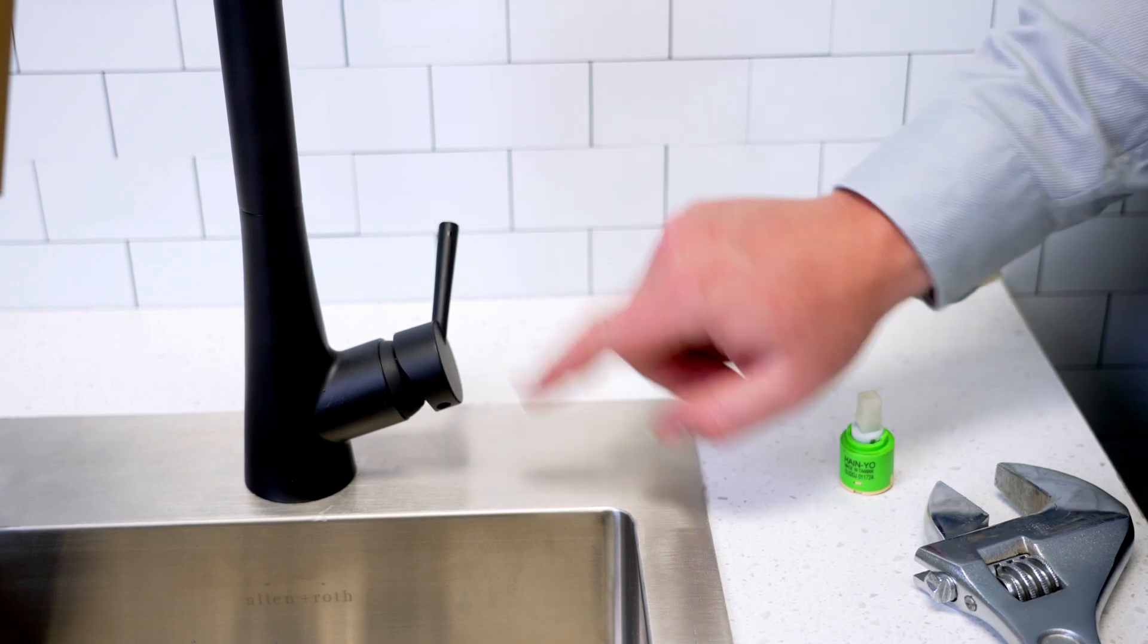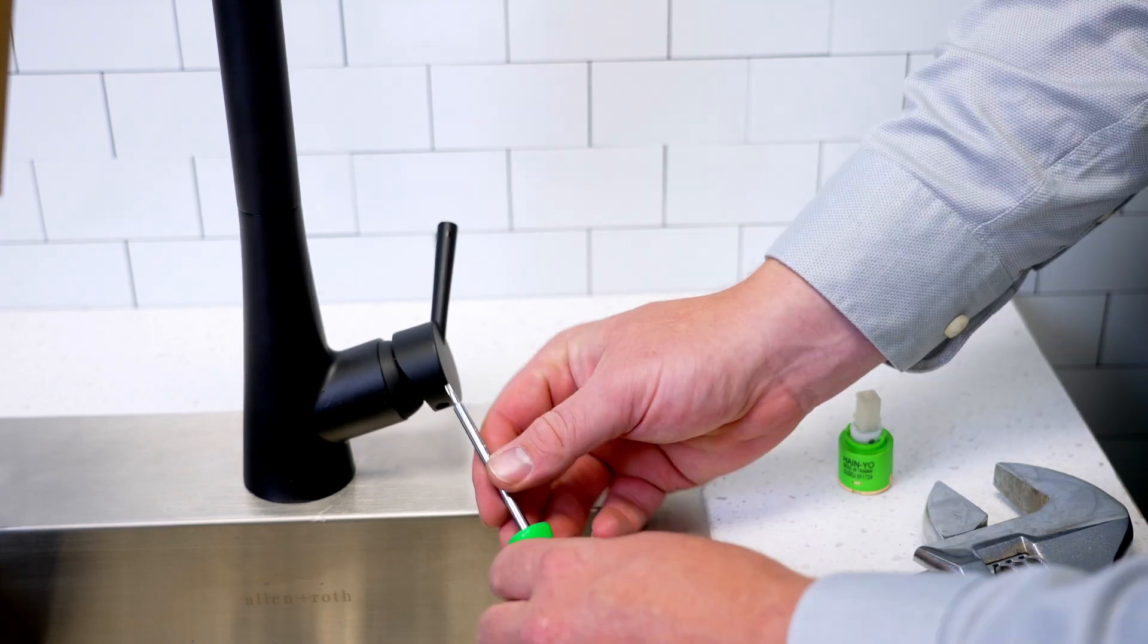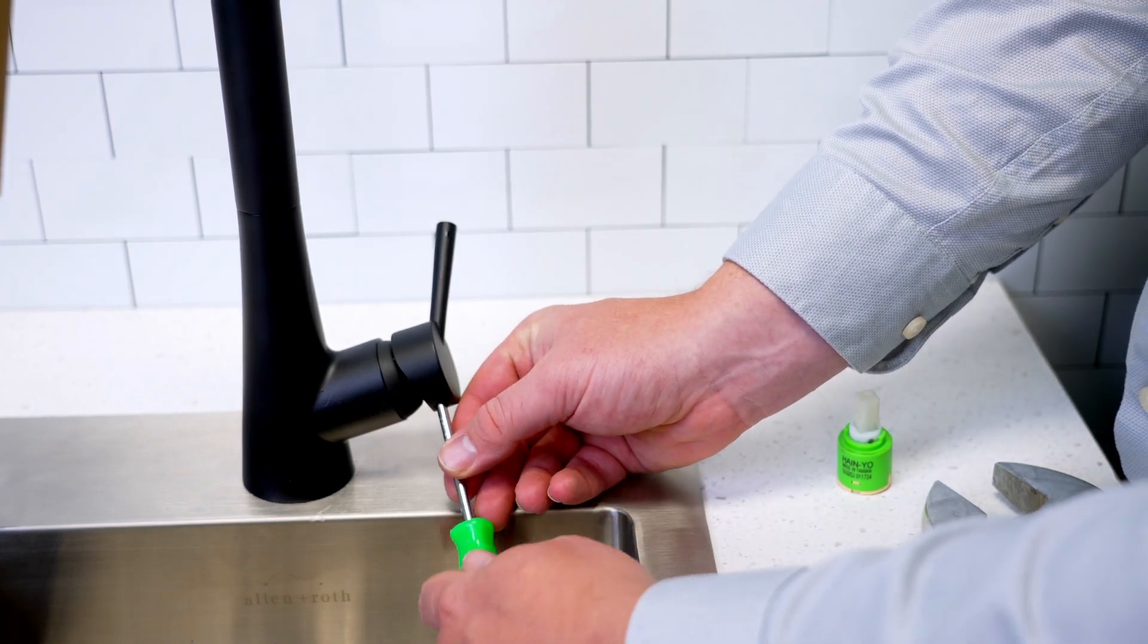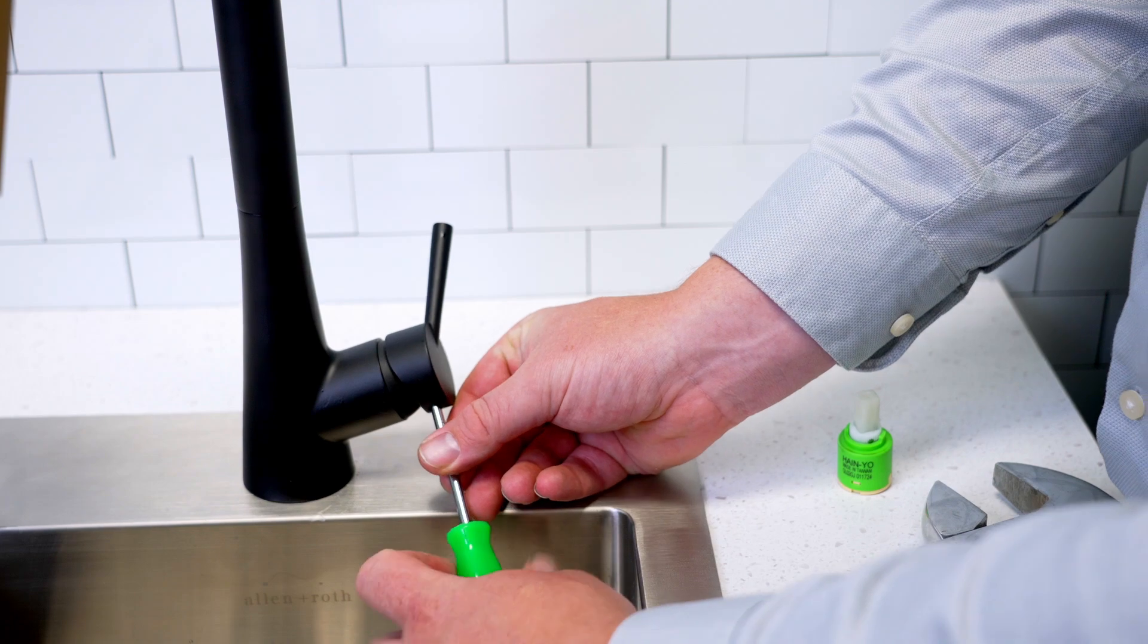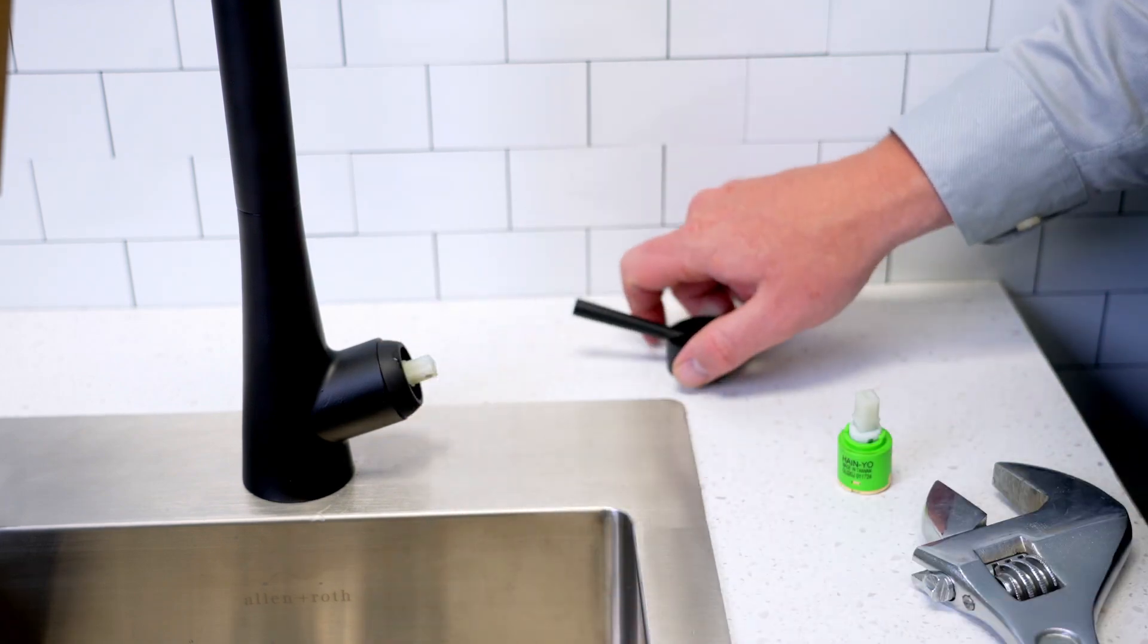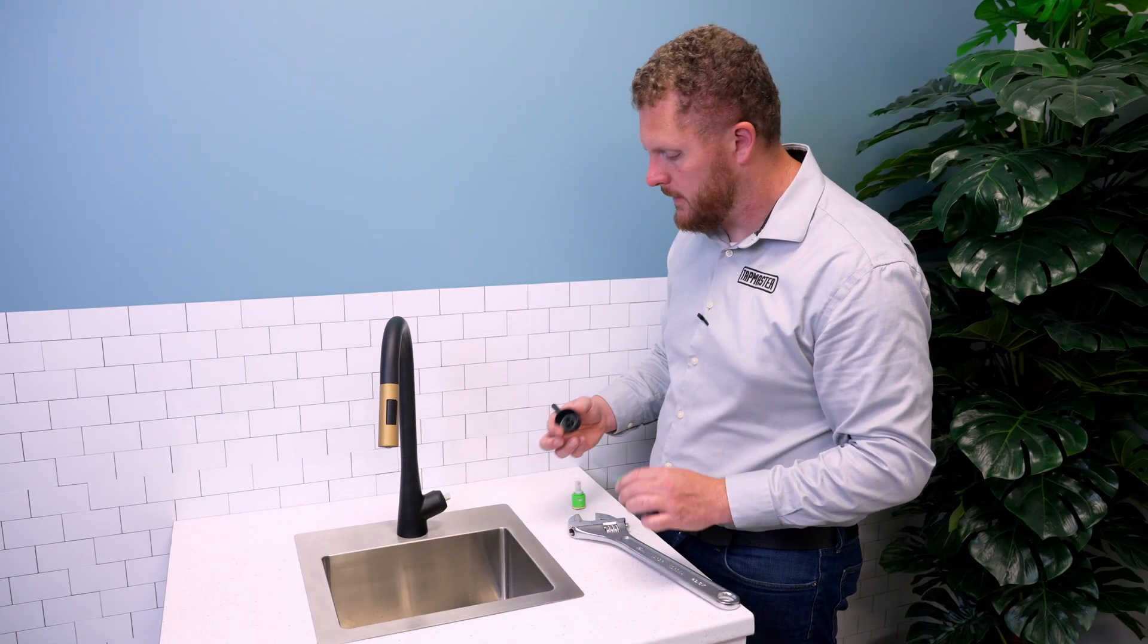Sometimes there's a little plastic cover you can just pop off. You put your hex wrench in there, loosen that little bolt or set screw about one turn, and the whole thing should slide right off.